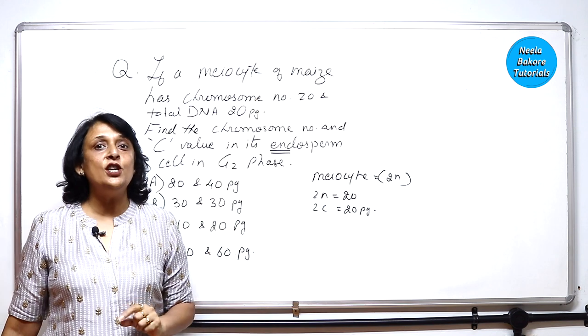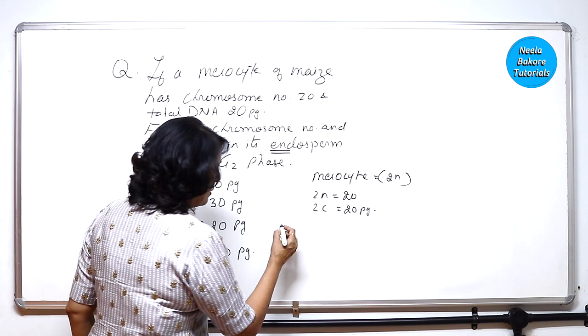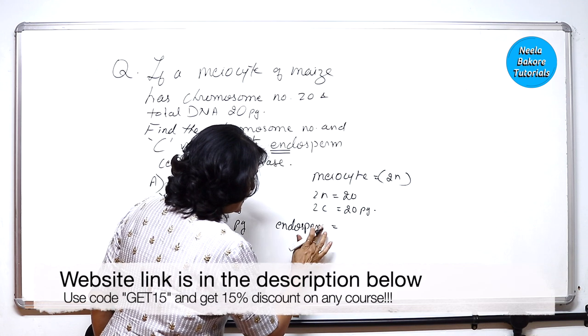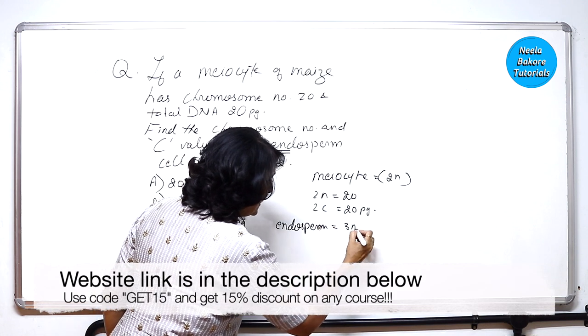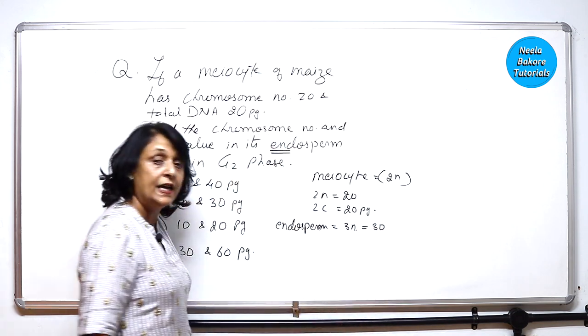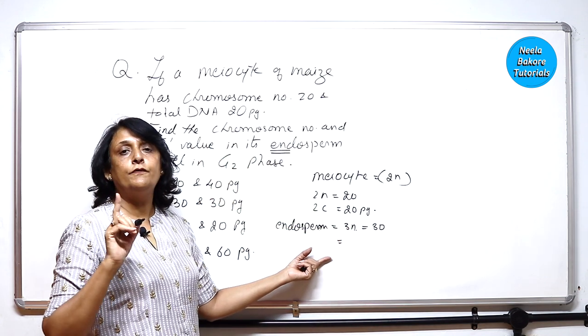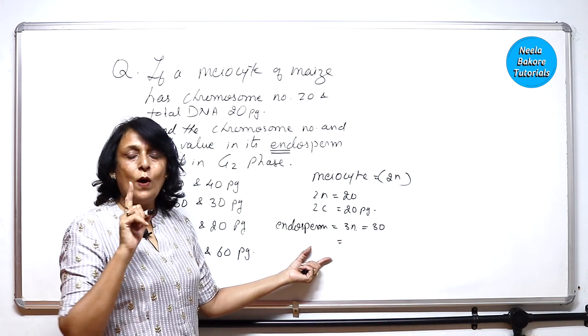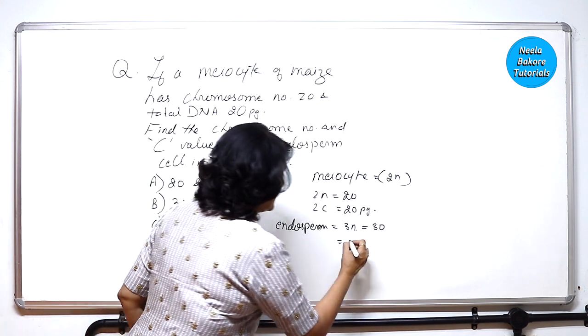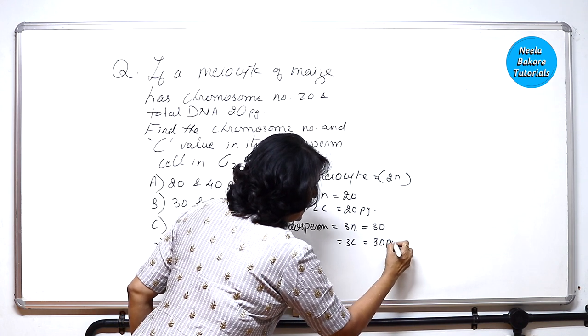Endosperm in angiosperms is triploid. So if you're talking about the endosperm cell, then it is 3N. So if you know 2N, you automatically know 3N. So it is going to be 30, the chromosome number, and in case of the C value, one set has 1C, so if there are 3N here, there would be 3C chromosome number. So that is again going to be 30 picograms.